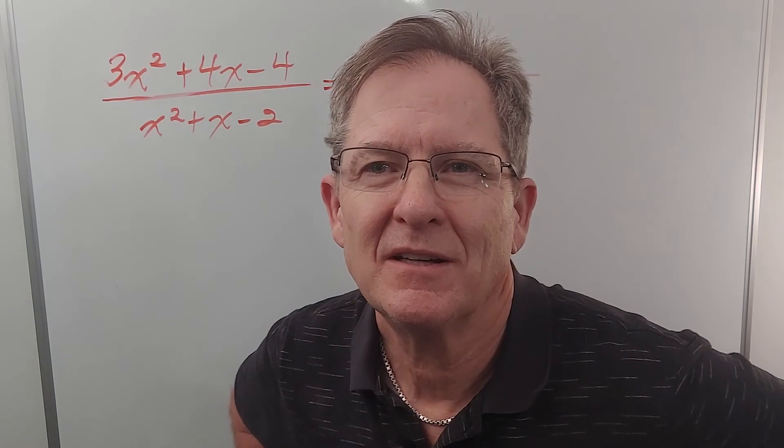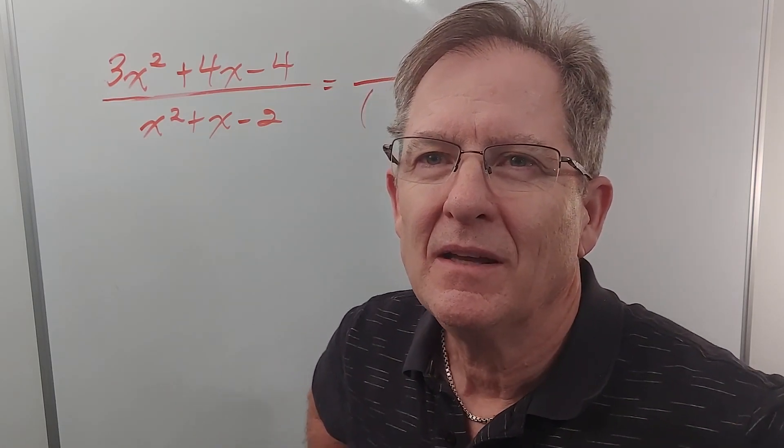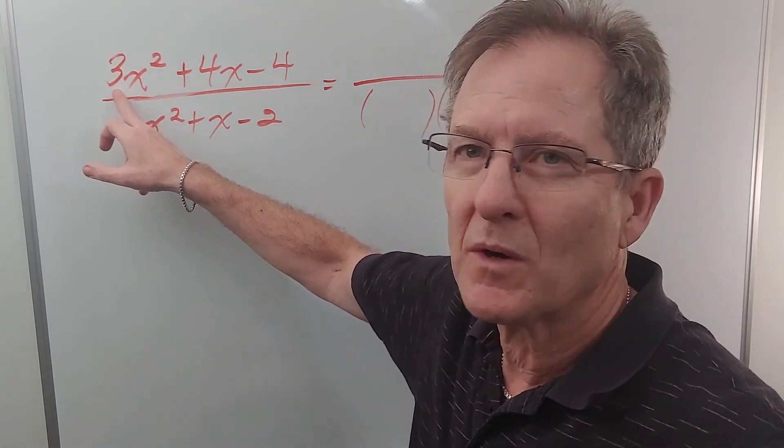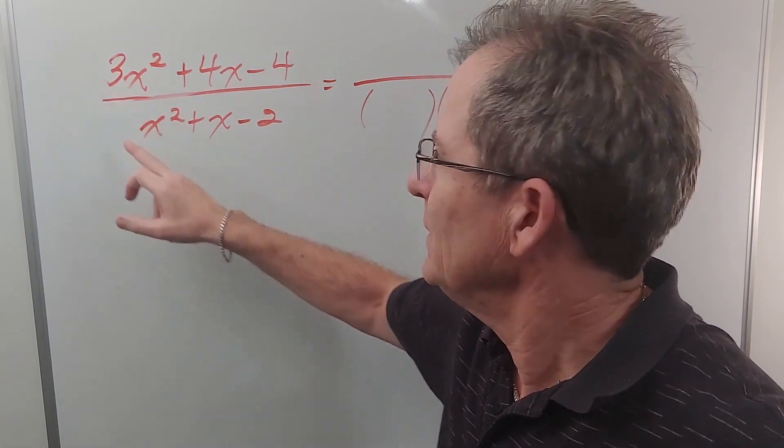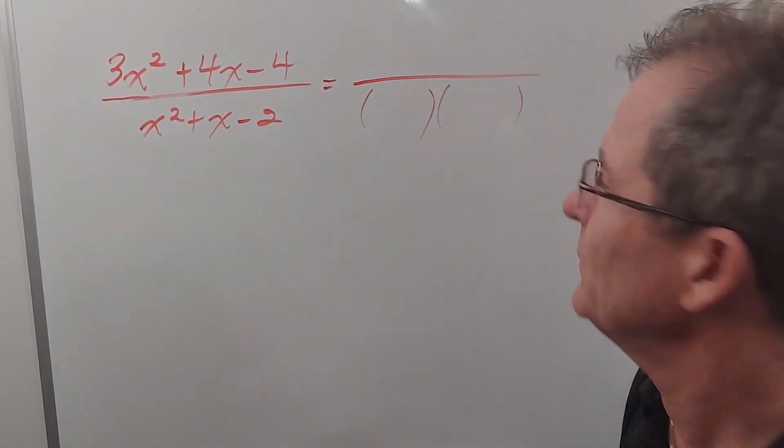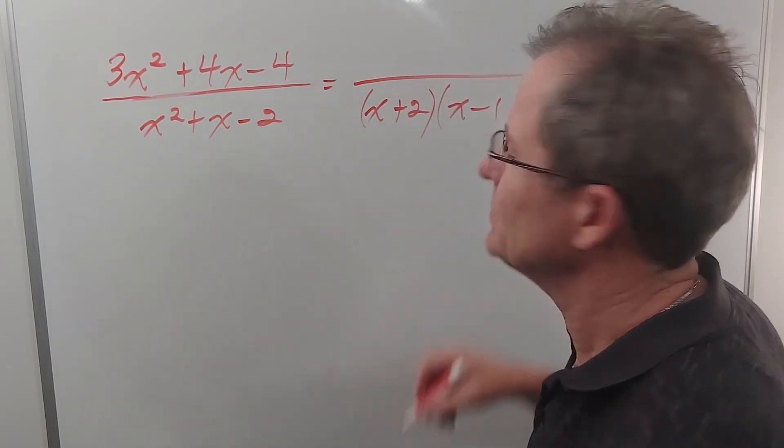Okay last time I said we would consider rational expressions with complex trinomials. For the first example I'm just going to put a complex trinomial on top. This is a simple trinomial and we've already factored that one. If you look back at a previous video that's just x plus 2 times x minus 1.